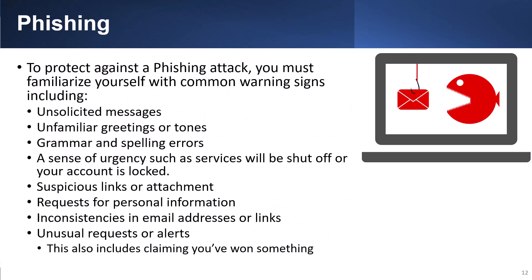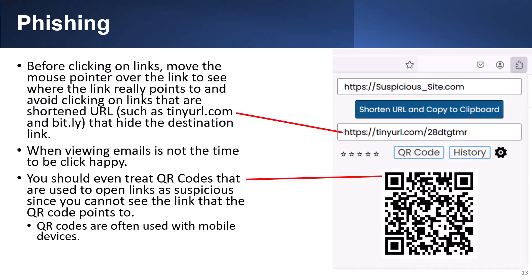To protect against a phishing attack, you must familiarize yourself with the common warning signs including unsolicited messages, unfamiliar greetings or tones, grammar and spelling errors, a sense of urgency such as services will be shut off or the account is locked, suspicious links or attachments, requests for personal information, inconsistencies in email addresses or links, unusual requests or alerts, and claims that you've won something. Before clicking on links, move the mouse pointer over the link to see where it really points to, and avoid clicking on shortened URLs such as tinyurl.com or bit.ly that hide the destination. When viewing emails, it is not the time to be click-happy. You should even treat QR codes that are used to open links as suspicious, since you cannot see the link that the QR code points to. QR codes are often used with mobile devices.